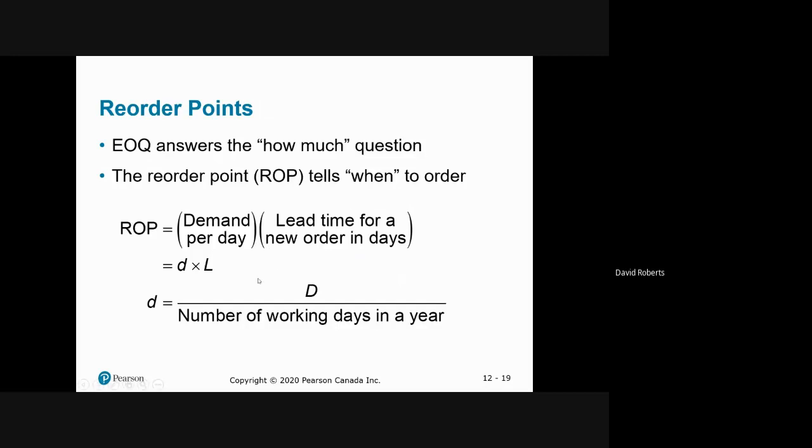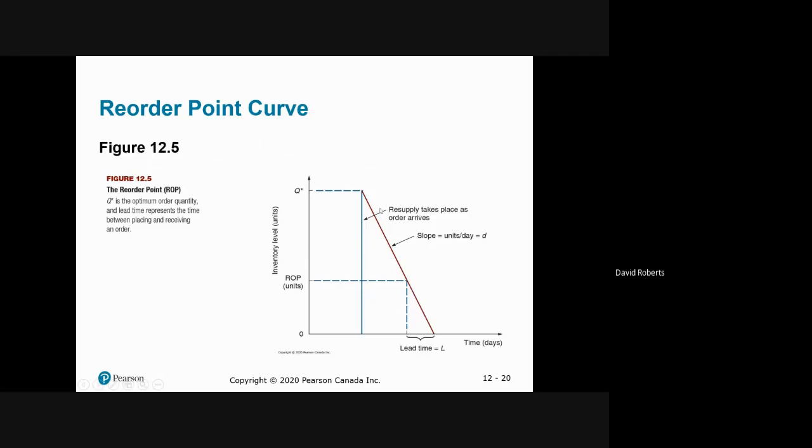Now reorder points has to do with when do you place the order. EOQ has to do with how much do you order, but it doesn't tell you when. So this is how you determine the stock level when you are going to order something. So you take the daily demand, which is little d, and multiply by the lead time. So it's very simple. If you use or consume three units a day, and it takes six days to replenish, you simply take three times six, you get 18. And when you have 18 units left, it's time to order more. But you have to then use EOQ to determine how much do I order. So it just tells you when to order, which is a very important factor.